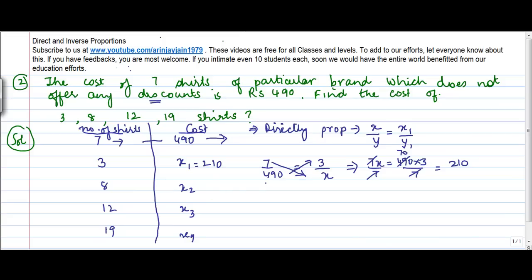Similarly, 7 upon 490 is equal to 8 upon x2. This is again 1 by 70, or x2, multiplying this by this and this by this, is equal to 8 into 70 is equal to 560.